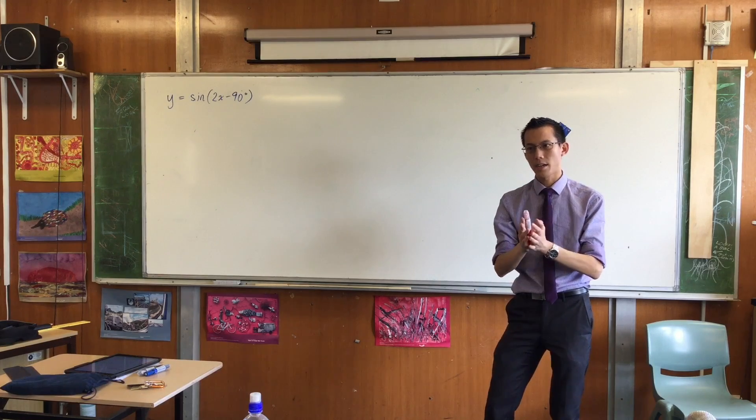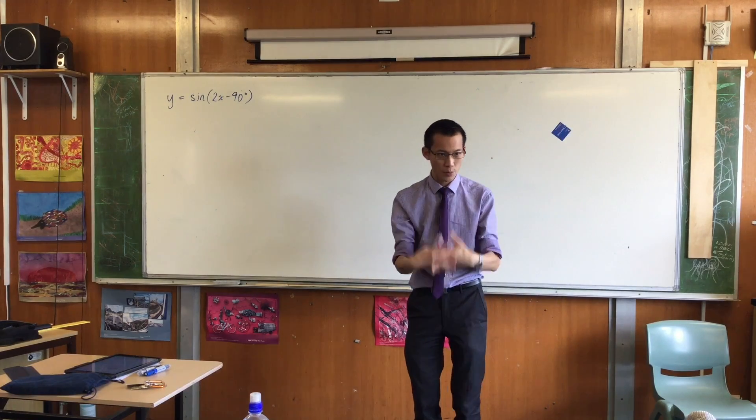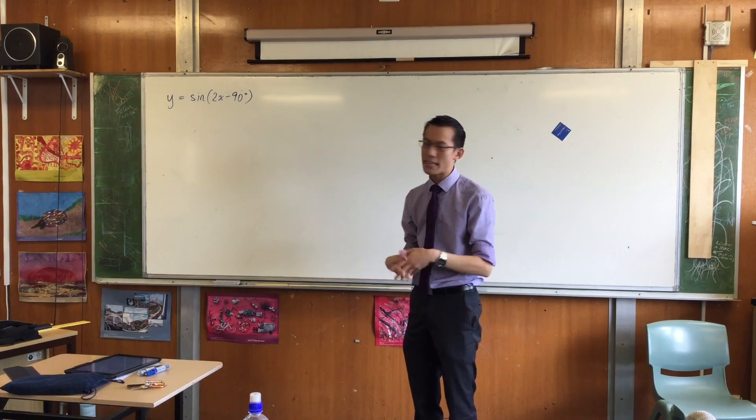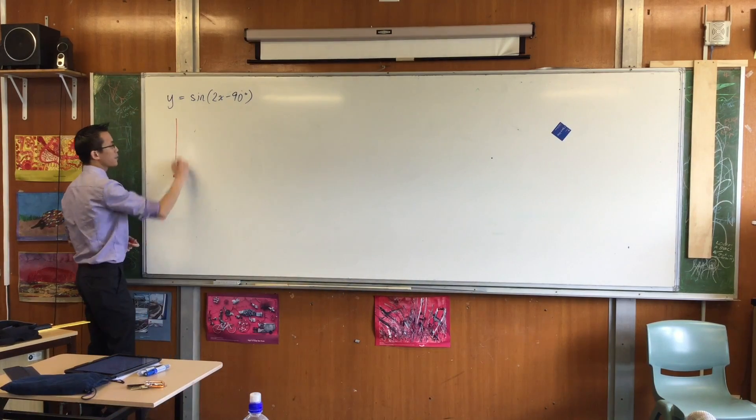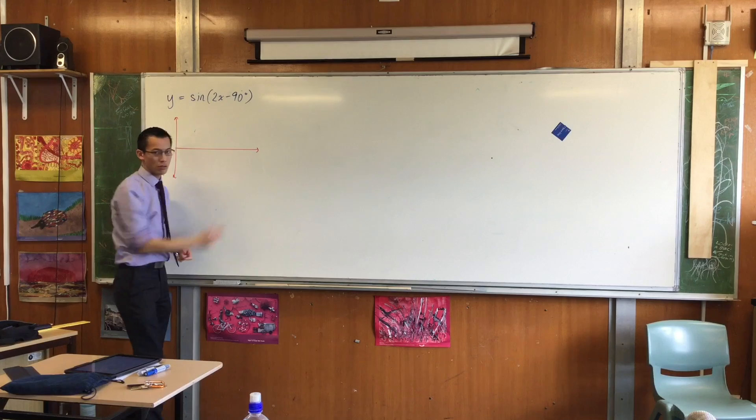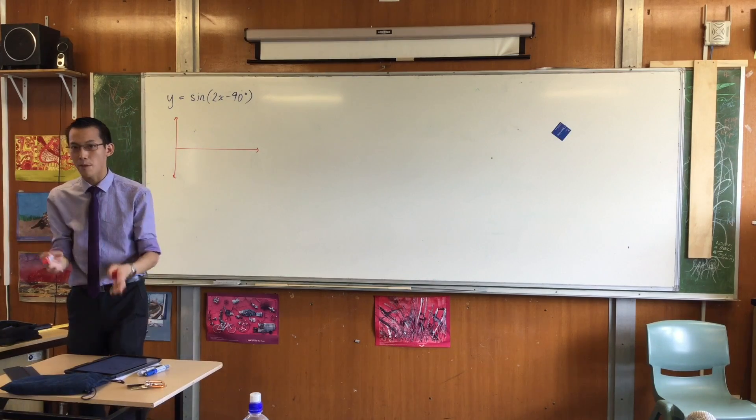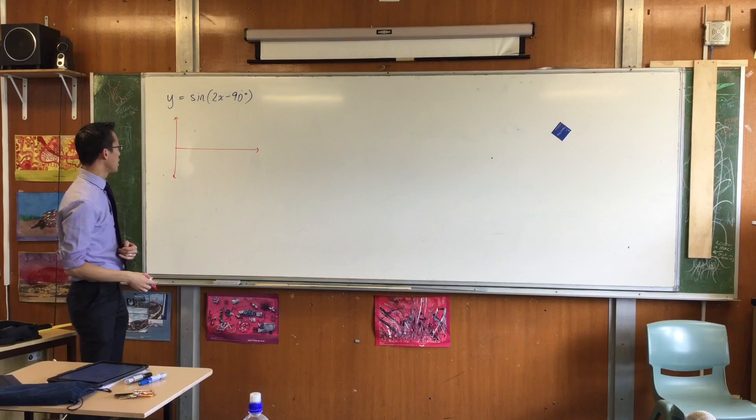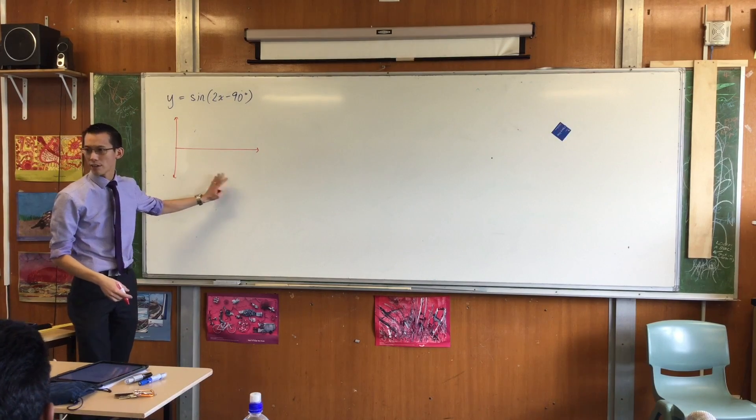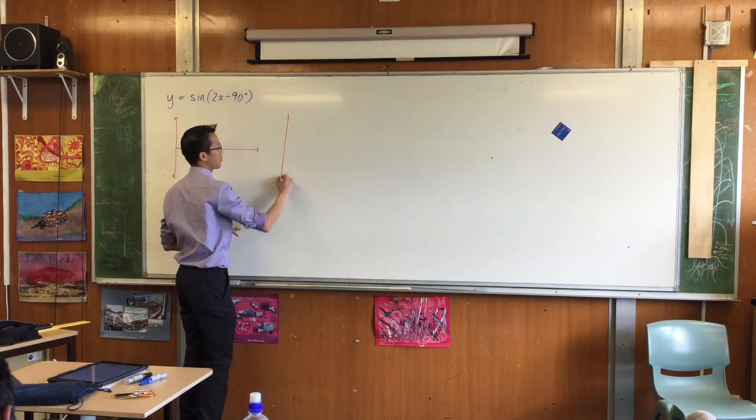But here's the trick. These two interact with each other in a way that maybe is a little bit surprising. Let me show you how. I'm going to graph this two different ways. We'll end up in the same graph both ways, but I'm going to show you two different methods for approaching it. So the first thing I want you to do is, can you just draw a regular sine graph for me? Just draw me a regular one from 0 to 360.